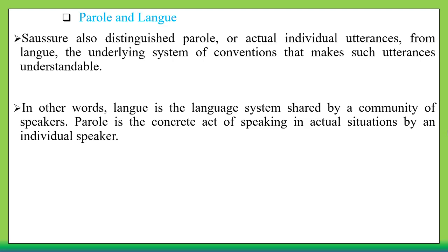Another dichotomy that Saussure came up with is langue and parole. He distinguished parole — actual individual utterances — from langue, the underlying system of conventions that makes such utterances understandable. Langue is the language system shared by a community of speakers, while parole is the concrete act of speaking in actual situations by an individual speaker.